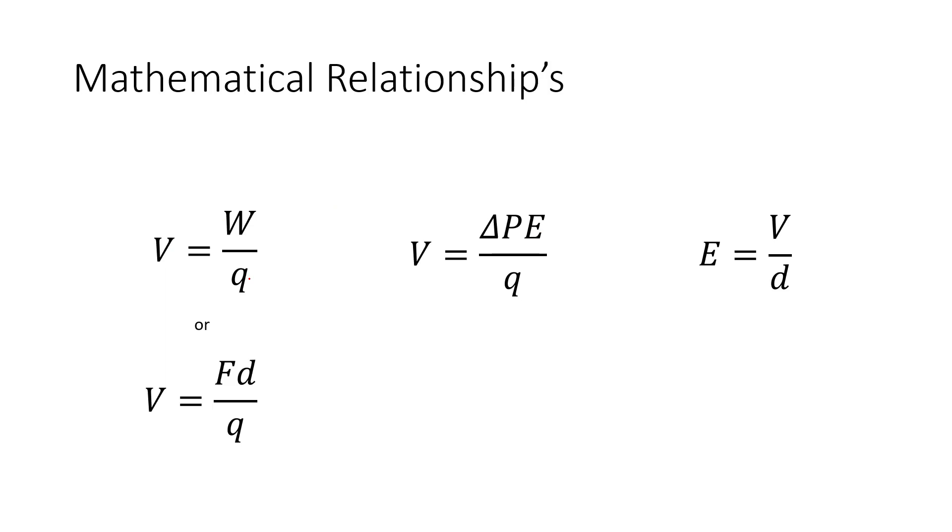These are the mathematical relationships. We have voltage equals work over charge. If you remember from before, work is force times distance, so we can replace force distance for work and we get this new version of the equation. Voltage equals potential energy, the change in potential energy over charge. The electrical field equals voltage over distance.